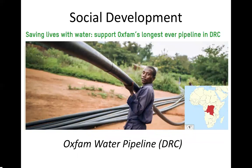Social development involves anything which affects someone's well-being and quality of life. This could include health, education, housing, equal opportunities to education and work, and even things like leisure and recreation — for example, green spaces where everyone can access playgrounds and open spaces to enjoy and feel healthy.